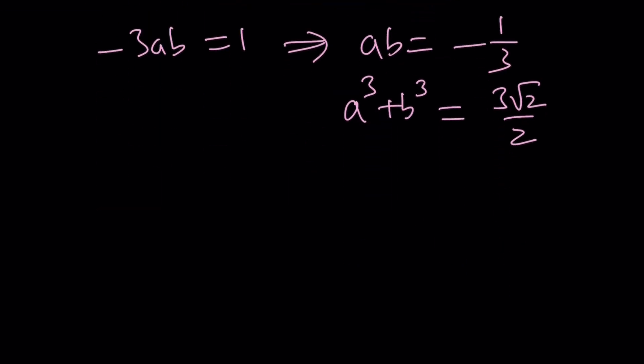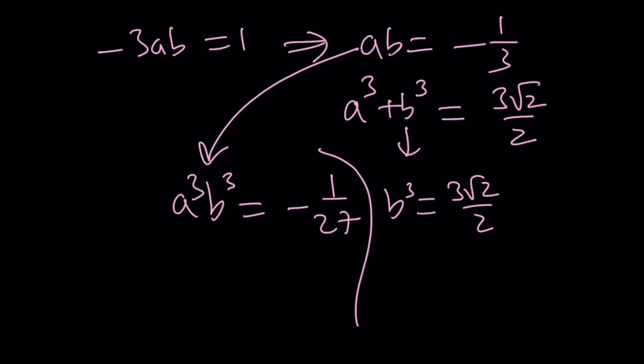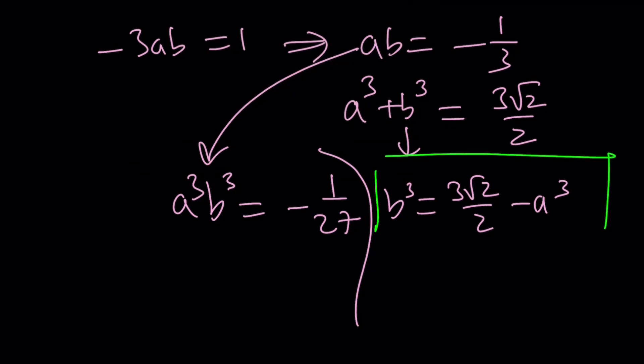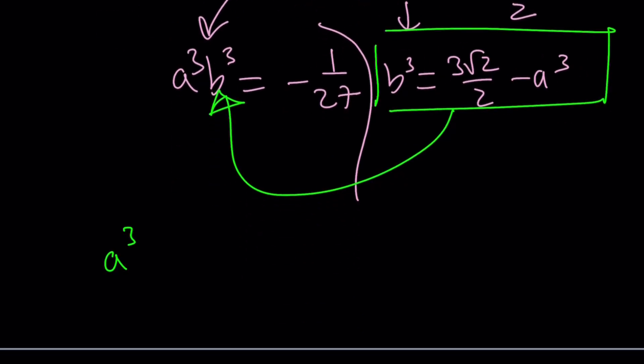What about the constant? I have a³ + b³, which is supposed to equal 3√2/4. So that gives us another equation. And obviously there's a couple different ways to look at it. One of which, my favorite, is cube both sides here. a³b³ = -1/27. And then from here, solve for b³. Write it as 3√2/2 - a³. And then take that and substitute here. Yay. That's how the cubic formula works.